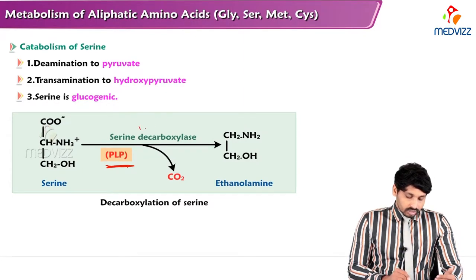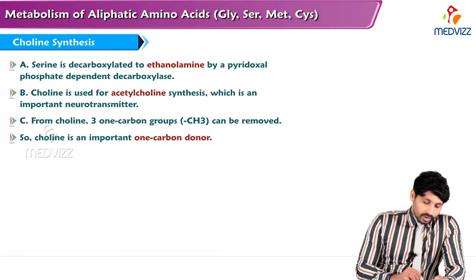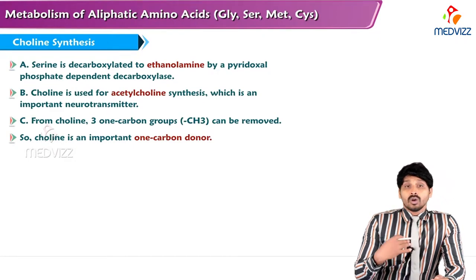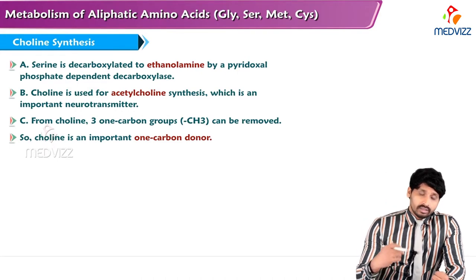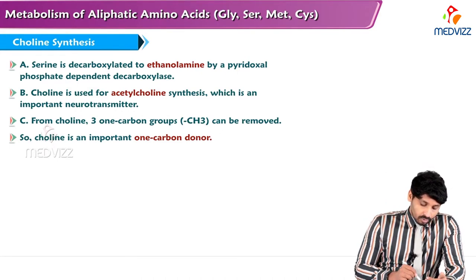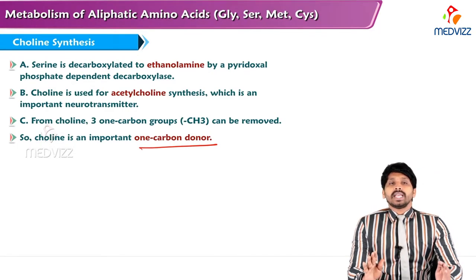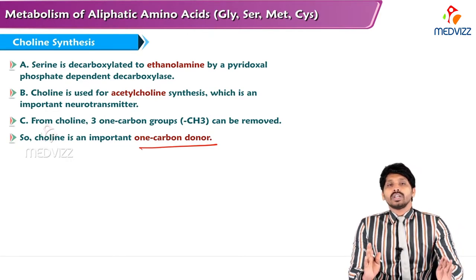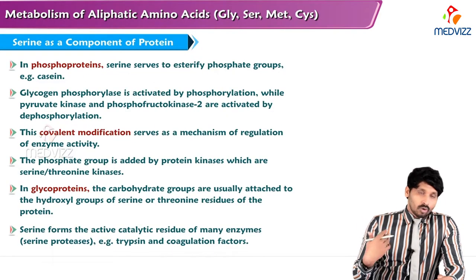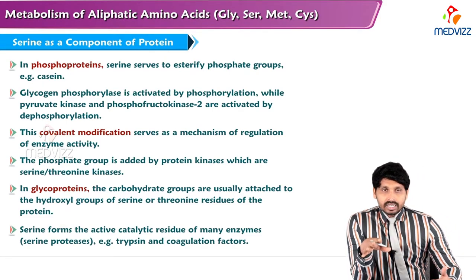Serine decarboxylase converts serine into ethanolamine, which is important for choline synthesis. Serine is decarboxylated to ethanolamine by a pyridoxal phosphate-dependent decarboxylase. Choline is used for acetylcholine synthesis, which is an important neurotransmitter. From choline, three one-carbon groups can be removed, making choline an important one-carbon donor. So serine is useful in making choline, and choline is involved in making acetylcholine.